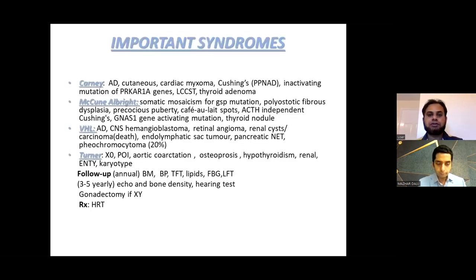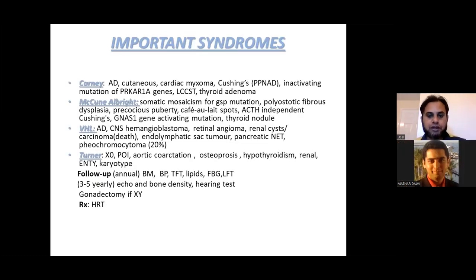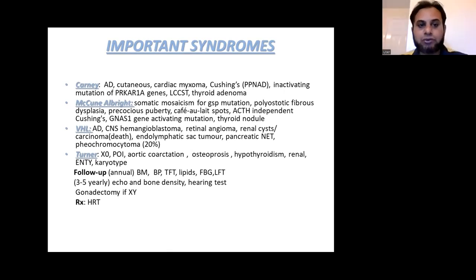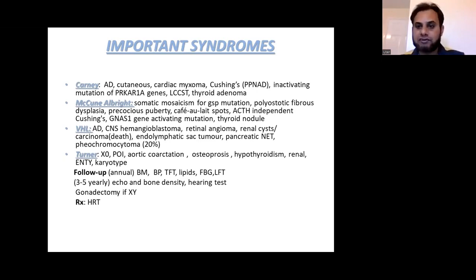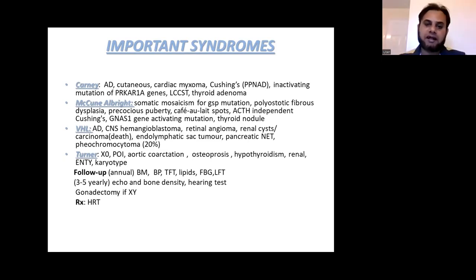So this is the first slide today: Important Syndromes. Number one is Carney Complex. This is autosomal dominant in inheritance pattern. It can have cutaneous manifestations, cardiac myxoma, and Cushing's syndrome, which is primary pigmented nodular adrenal disease — meaning it is primarily an adrenal disease, not coming from the pituitary. It can have an inactivating mutation of the PRKAR1A gene, and it can also have a Sertoli cell tumor and thyroid adenoma.